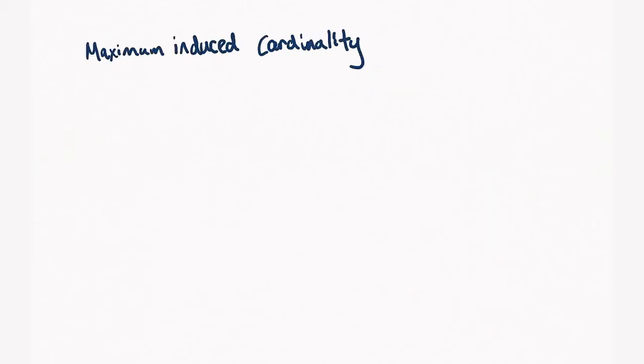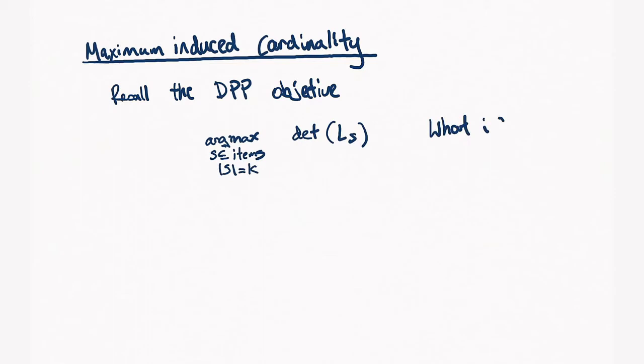So, now that we covered DPPs, what is maximum induced cardinality? You might have noticed that the DPP objective from before has a slight issue with it. And that issue is what if your similarity matrix has very low rank? Well, then L sub S for any S larger than the rank in size will have determinant 0. So, it's quite an ill-conditioned objective function. But if we're thinking about diversity, this somehow doesn't make sense because we would expect picking more items to give us more choices and more diversity overall.